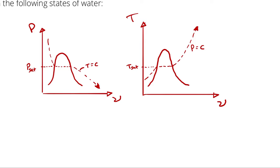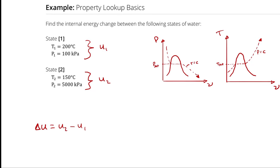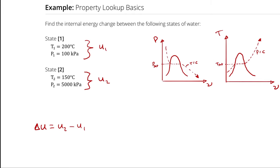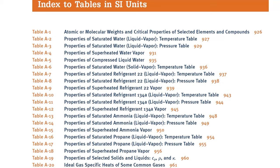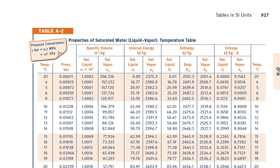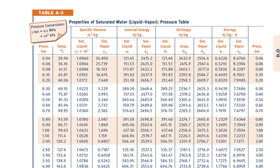So we have two ways to approach fixing the phase for state 1, and in the interest of building proficiency, let's try it both ways. At state 1, if I wanted to start by determining the saturation temperature corresponding to my pressure, I would go into my saturation tables in order of pressure — that would be table A3. So I jump over to table A3.